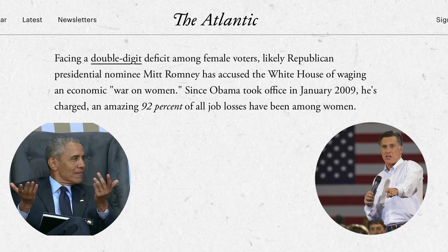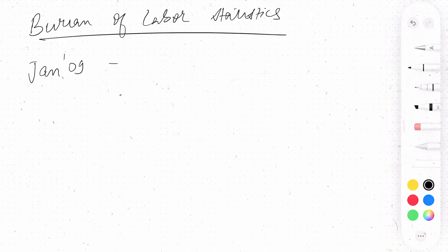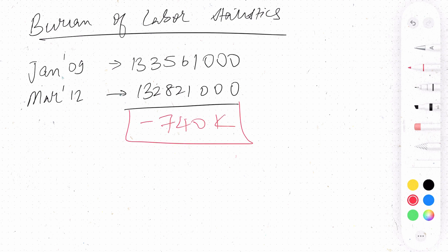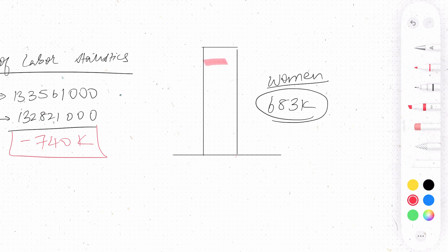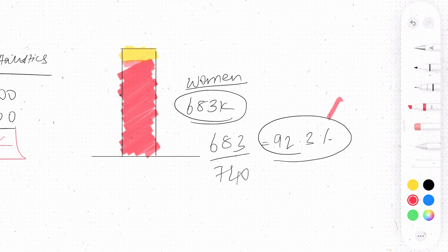To tackle this issue, Romney's administration came up with a bold statement: '92% of all job losses have been among women.' Let's get into the numbers. On January 2009, there were 133.5 million total jobs; by March 2012, 132.8 million — a difference of minus 740k. Women had 683k job losses, so 683 divided by 740 equals 92.3% — that's how they derived that number.